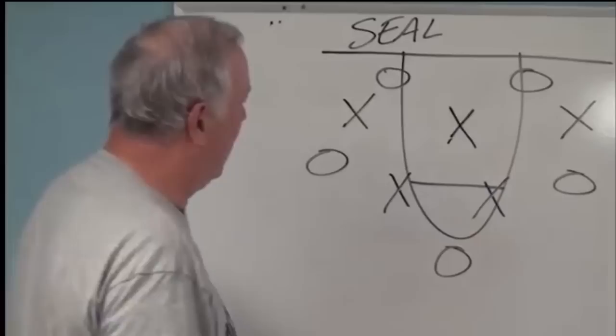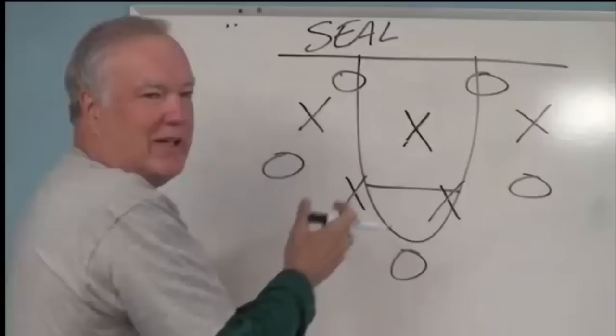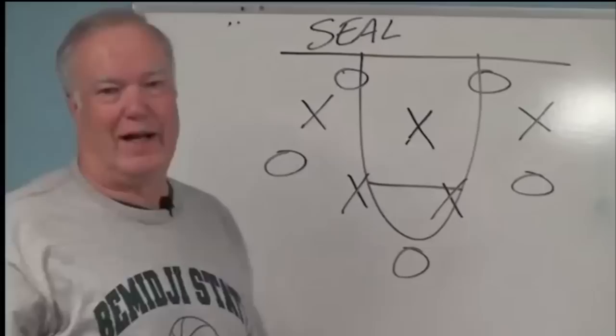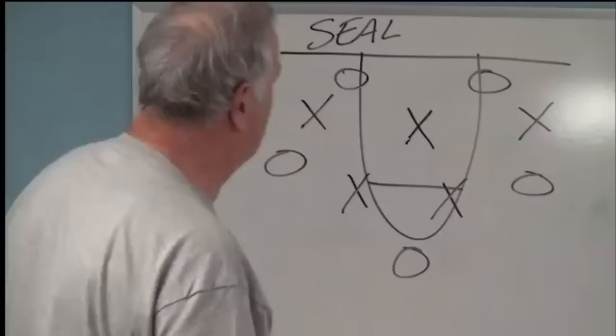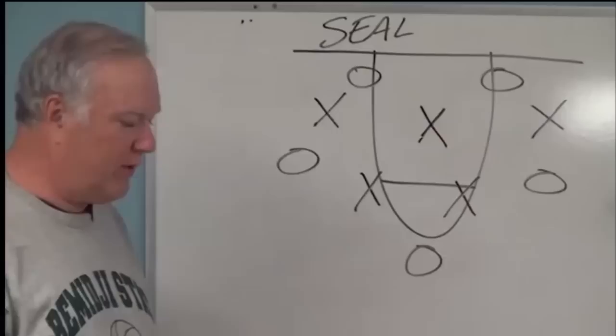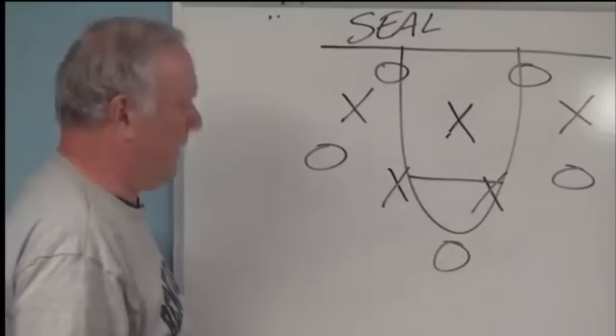So here's our initial look. We're in a 1-2-2 and I want you to notice the equidistant spacing between everybody. Now, these two bottom guys, we have some limitations because there's a lane. We'd probably put people right here and right here if we could, but we've got that three second lane. We can't do that. So we've got that equidistant spacing. And we want to sustain that equidistant spacing all the time.